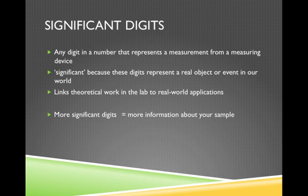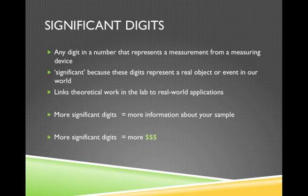Something else we can say about our measuring tools is that the more significant digits we have, the more information we're going to get about our sample. Each one of those digits represents a little more detail about the object or event we're measuring. If we can get more of those, then we get a better measurement. Unfortunately, those more significant digits come at a cost. Higher quality instruments can provide more significant digits, but you have to pay for that, and a lot of times the extra significant digits don't just come at a little cost — they come at a very big one.